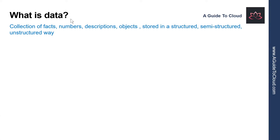So what is data? Data is a collection of facts such as numbers, descriptions, and observations used in decision-making. You can classify data as structured, semi-structured, or unstructured.